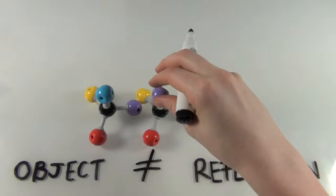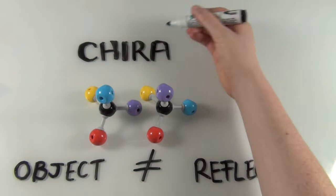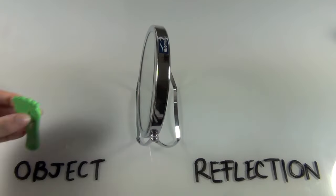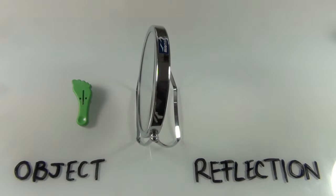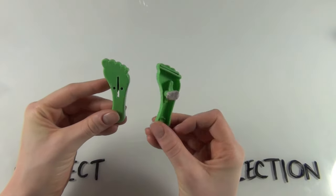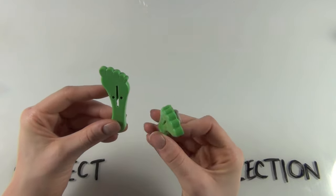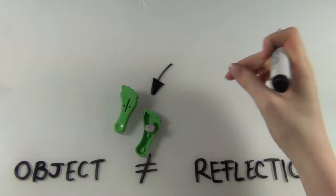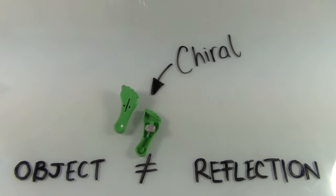So we have another object and its reflection. And there's no way that I can rotate the reflection so that those two objects are the same. So they are chiral objects.